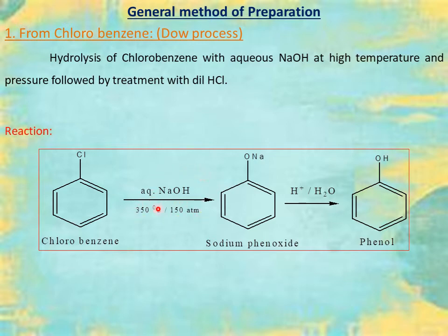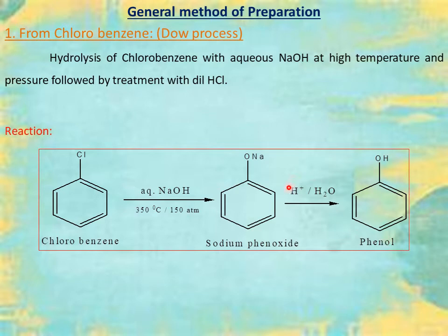The NaOH reacts with chlorobenzene, especially with the chlorine atom, and forms sodium phenoxide. The obtained sodium phenoxide is a salt. It is converted into phenol simply by acidification in the presence of water. So, chlorobenzene reacts with NaOH — we get sodium phenoxide, which upon acidification gives phenol.